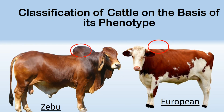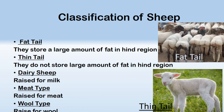Cattle can also be classified on the basis of the presence or absence of a hump. There are actually two types of cattle: one is called Zebu and the other one is called European cattle. The Zebu cattle has a large hump while European cattle do not have a hump.